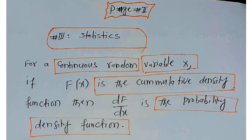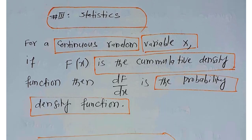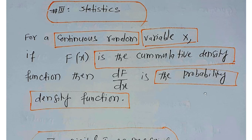Similarly, in statistics, for a continuous random variable x, if F(x) is the cumulative density function, then its derivative is the probability density function. Students of statistics will know very well what the cumulative density function and probability density function are. So in statistics, the derivative performs the role of a probability density function.